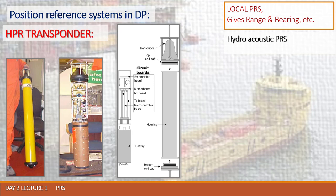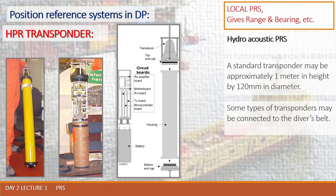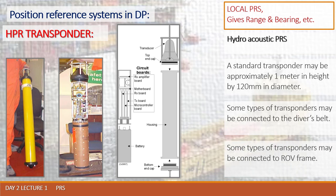The transducer has bottom and top covers, and is prepared for certain operational depths. One example of a standard transporter is approximately one meter in height and 120 millimeters in diameter. Some types of transporters may be connected to a diver's belt — those are not discussed here and are normally smaller in weight and dimensions. Some types of transporters may also be connected to an ROV frame to indicate the movement of the ROV at the sea bottom, since it is otherwise hard to monitor ROV positioning in underwater environments.